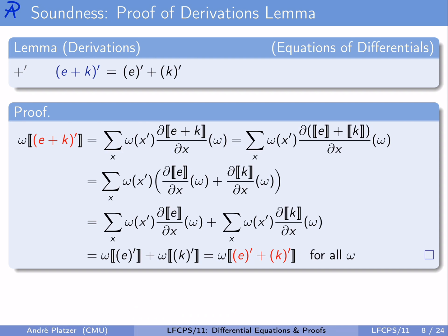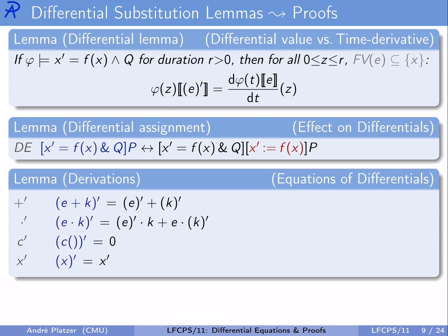Likewise, can you do the proofs for the other axioms for differentials? Jointly they enable us to apply the differential operator to anything. This tells us what the differential of a sum is; other axioms tell us what the differential of a product, a constant, or a variable is. Each time, the right-hand side is structurally simpler because the differential operator is applied only to smaller terms, so rewriting from left to right keeps getting structurally simpler and simpler terms.